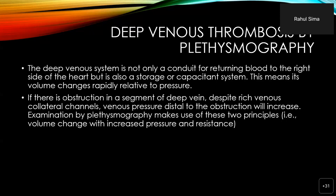The deep venous system is not only a conduit for returning blood to the right side of the heart, but also a capacitance system — meaning volume changes rapidly relative to pressure. If there is an obstruction in a segment of deep vein despite collateral channels, venous pressure distal to the obstruction will increase. Examination by plethysmography makes use of these two principles.